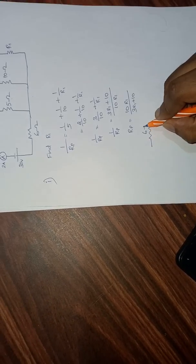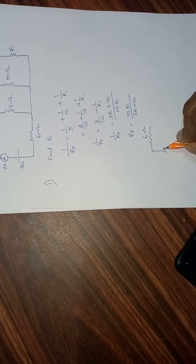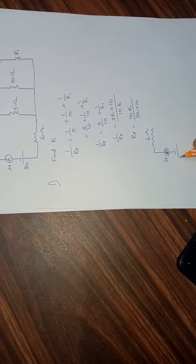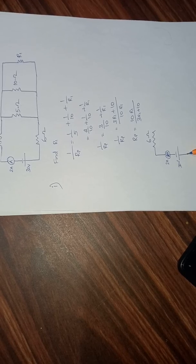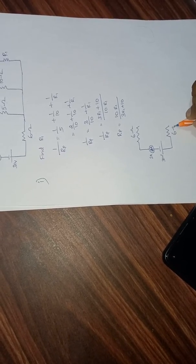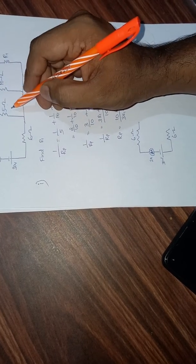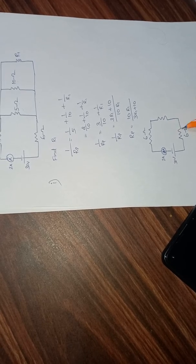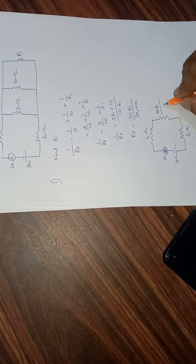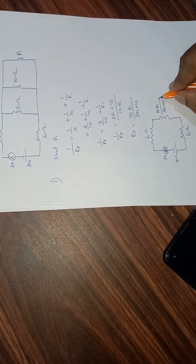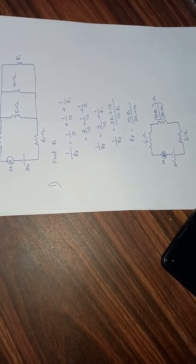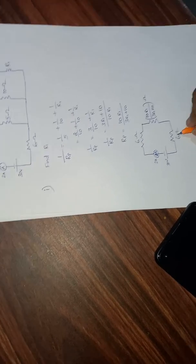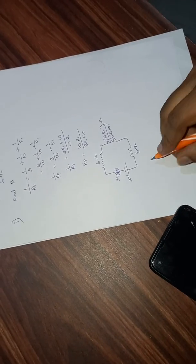We can now redraw the circuit. There is a 6-ohm resistor, 2 amperes flowing through the ammeter, and the 30-volt battery. Another 6-ohm resistor is connected, and instead of the three resistors — 5-ohm, 10-ohm, and R1 — we write a single equivalent resistor with value 10R1 / (3R1 + 10).